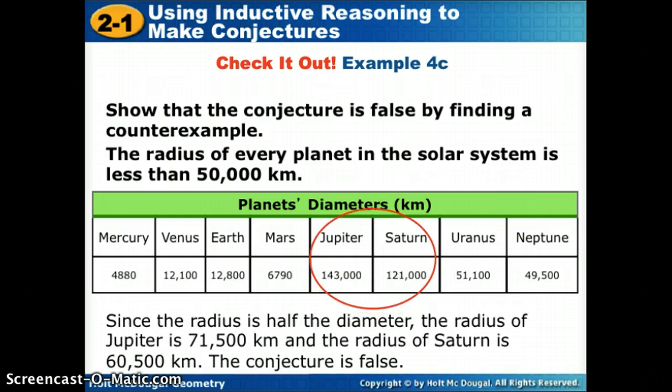Since the radius is half the diameter, the radius of Jupiter would be half of this, which is 71,500, and the radius of Saturn would be half of what's listed here for diameter, which is 60,500. So our conjecture is false because we found some planets who have a radius that is greater than 50,000. So this one, a lot of people see inductive reasoning as being difficult because someone's not giving us the answer. So we're going to have to brainstorm and come up with some different ways to look at our problems to try and come up with a counterexample or what might come next in a pattern.